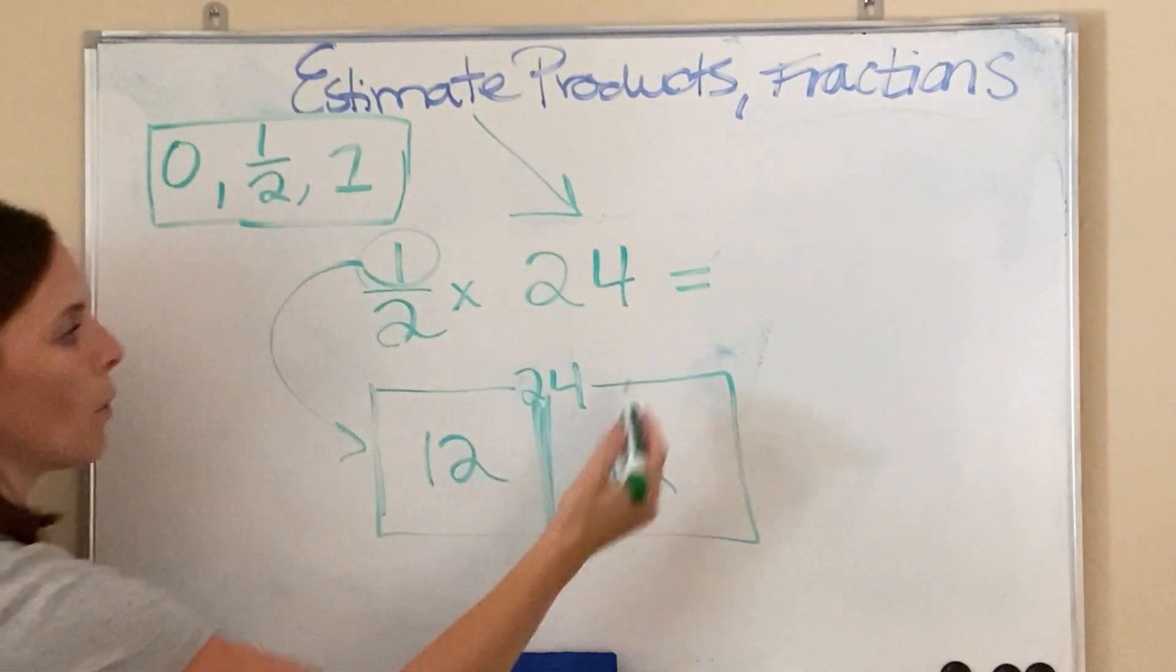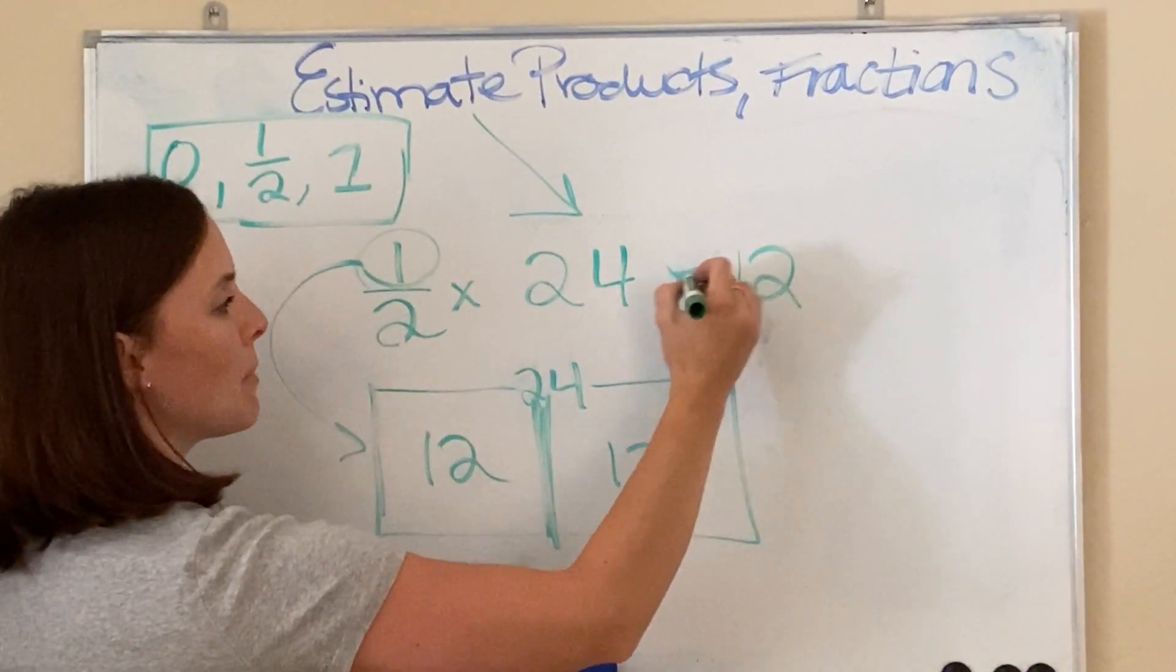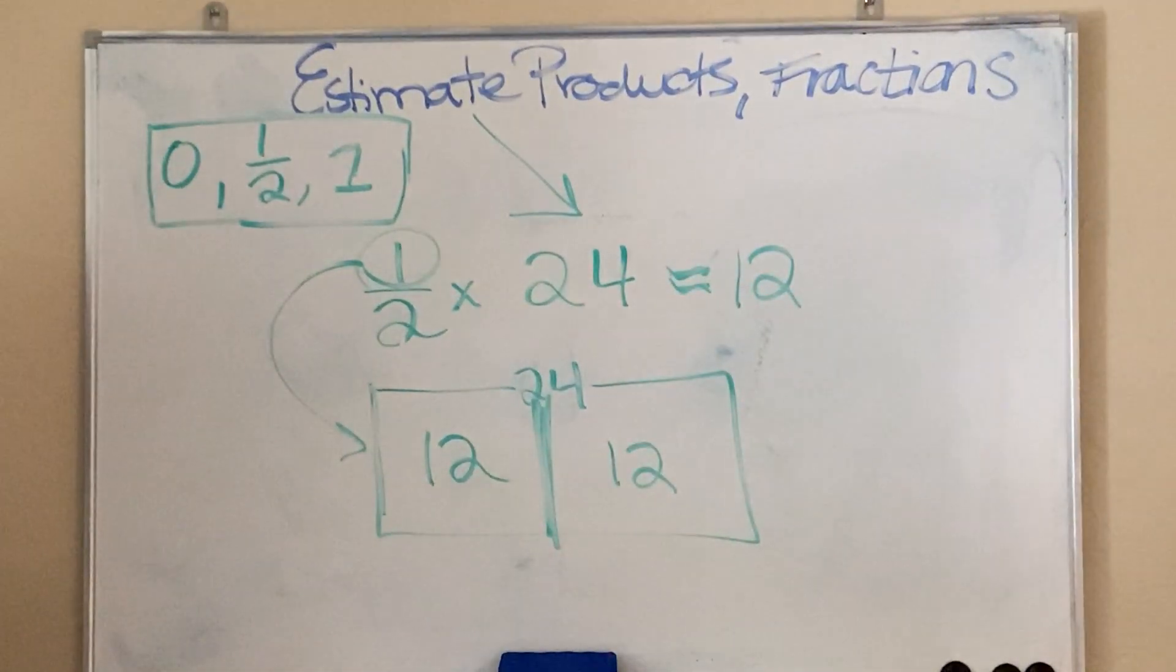So, 12 is the value of each box. And my answer is the numerator telling me I want the value of just one of them. The value of 1 is 12. So, our estimated answer is about 12.